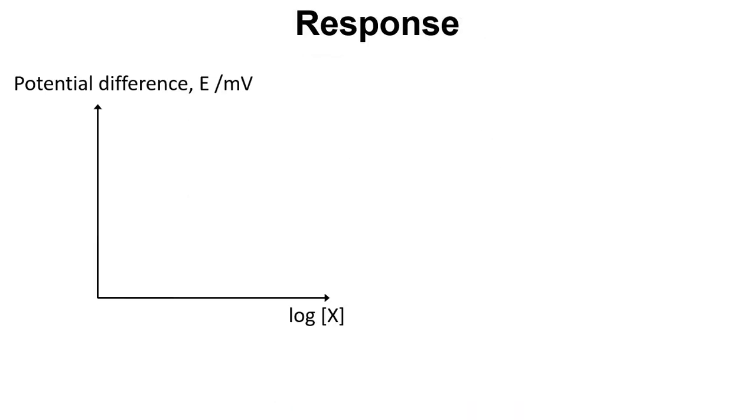So we can plot that data, that potential difference in millivolts versus the log of the concentration for the standards that we've measured. What we see is that we get a linear response in the potential difference versus the log of that concentration and that's a bit different from what we'd normally expect.